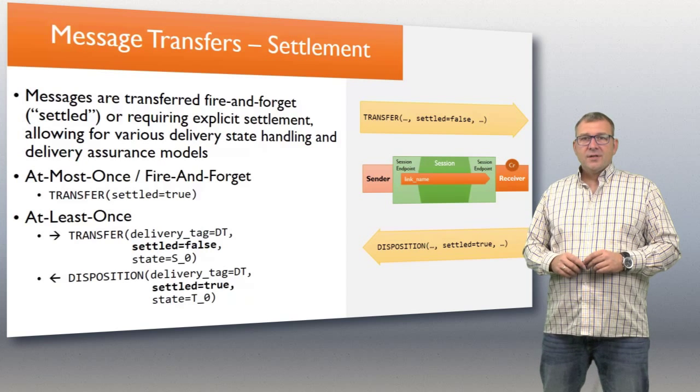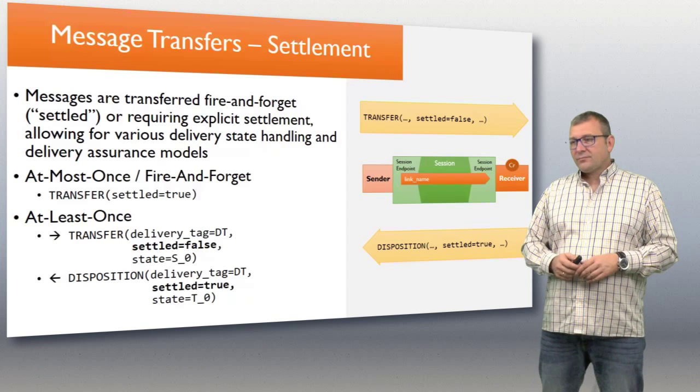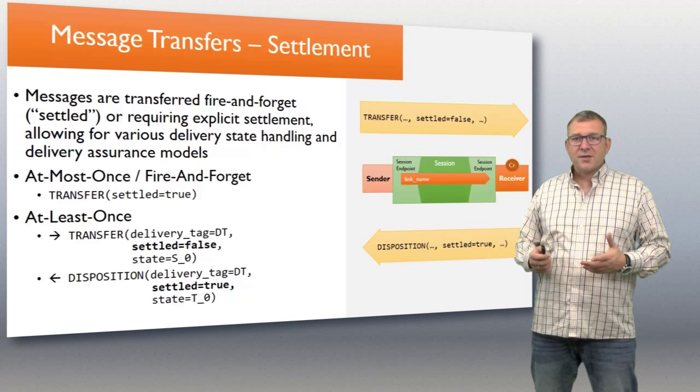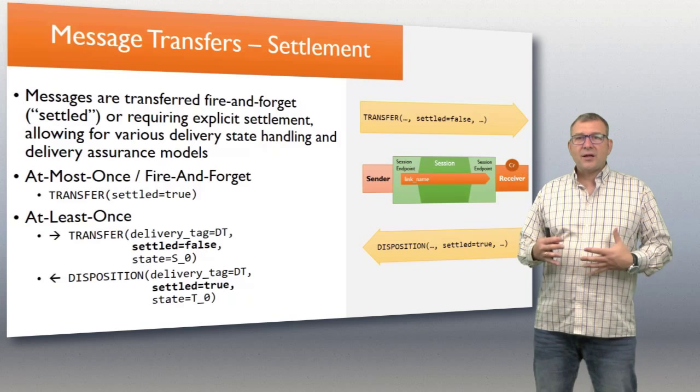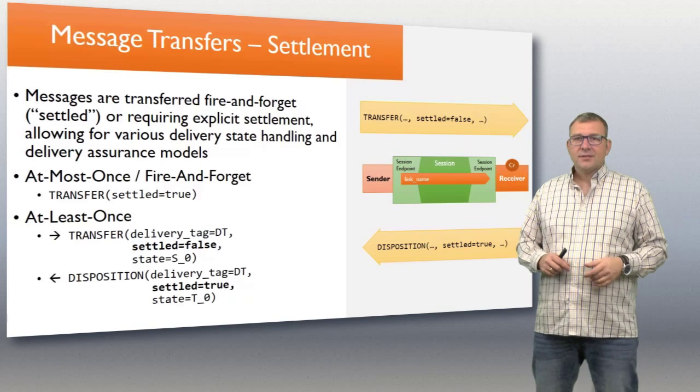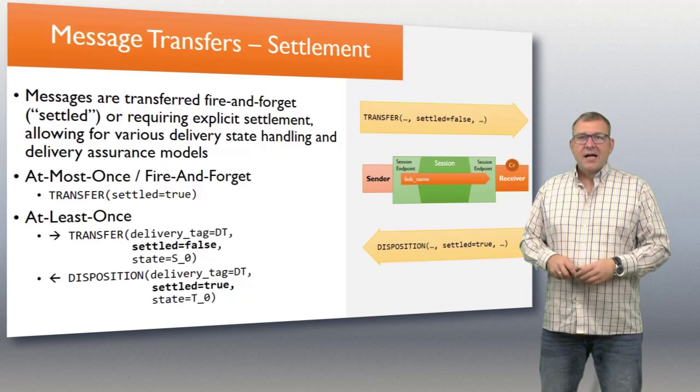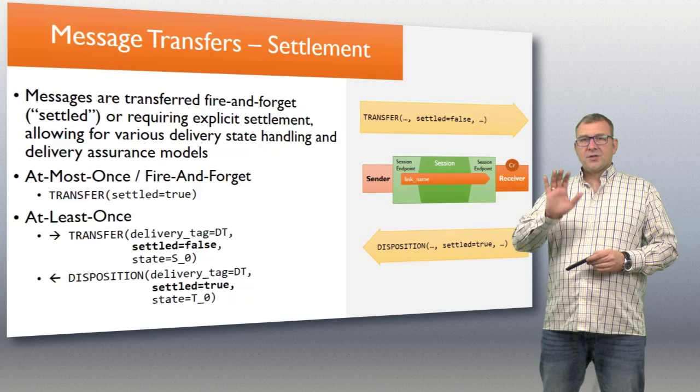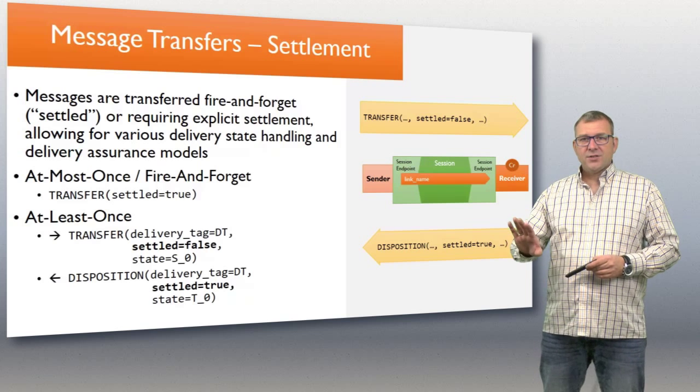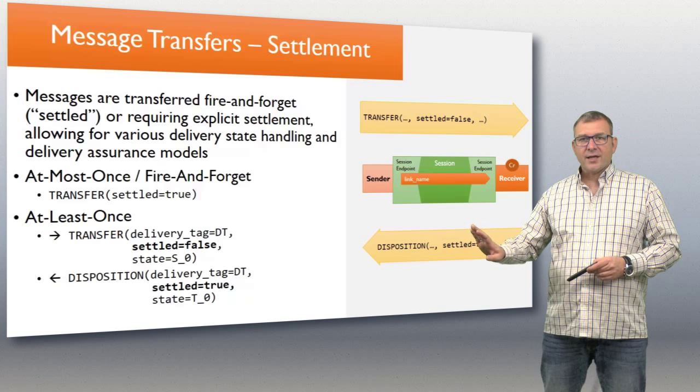Message transfers happen over links. We've established the notion of links in the previous session. There's two fundamental ways transfers happen: settled or unsettled. A settled message is fire-and-forget. That means here's a message I'm going to send you and I never want to hear about it again. Because for me, it's settled.